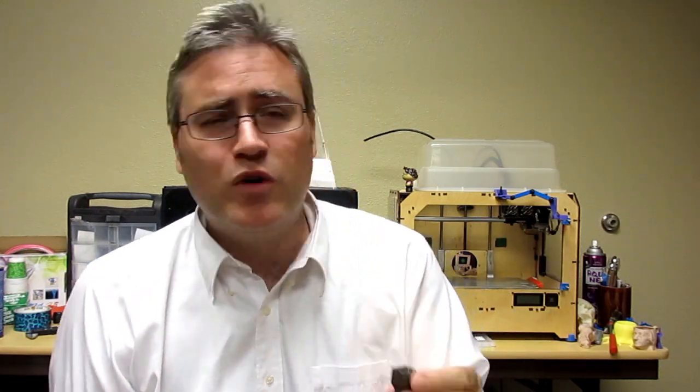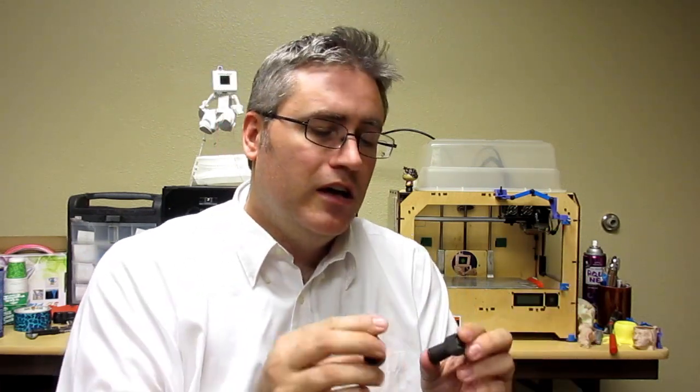It got worse and worse the more I tried to do this. So, in the end, do I think that this tungsten G-mass filament is worth it? I really don't know. Like I said, it's considerably more brittle than normal ABS. You are sacrificing integrity. And like I said, this was the 60% infill.